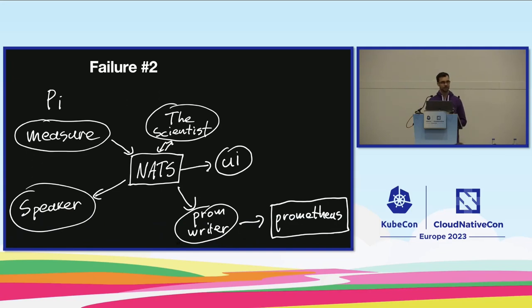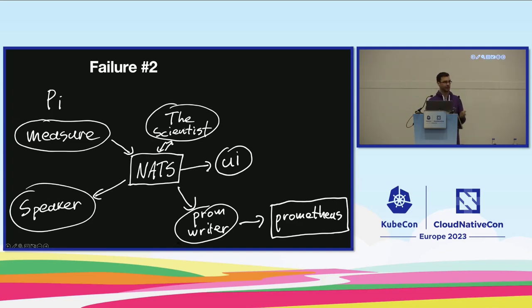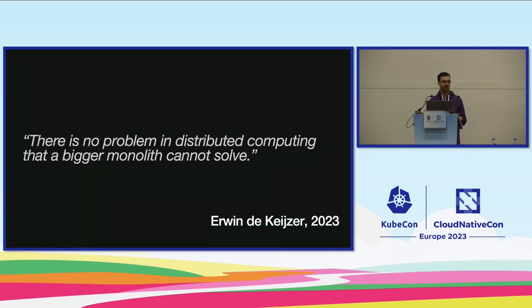This brings me immediately to the second failure: this is too much. I'm an elevator engineer by night — maintaining five components at a time just became too complicated. I had issues with restarting services, naming services. I thought to myself: there's no problem in distributed computing that a bigger monolith cannot solve.